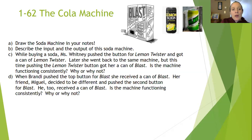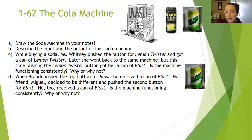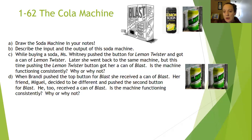Let's look at example two. Brandy decides she wants blast, so she hits the top button and gets a blast. Her friend Miguel decides he's going to get a blast too, but he hits the second button — and he also receives a can of blast. Is this machine functioning consistently? Why or why not? Pause the video and write your answer. This one is functioning consistently because I can predict what's going to happen: hit the top blast button, get a blast; hit the second blast button, get a blast.